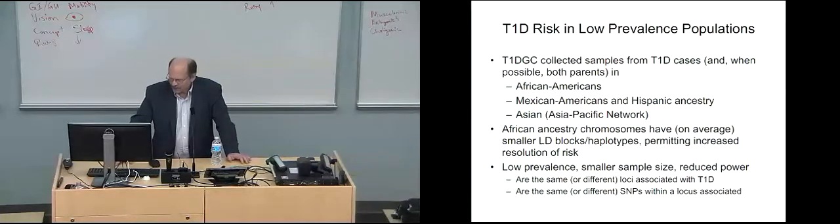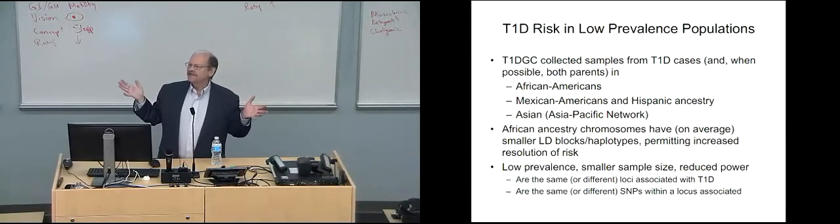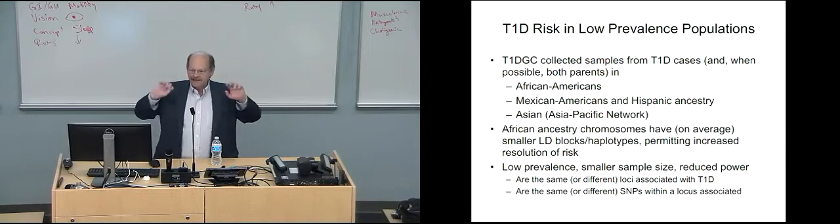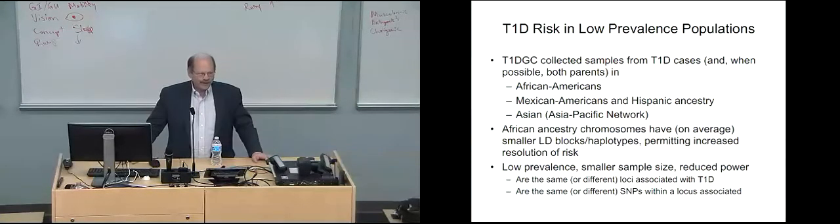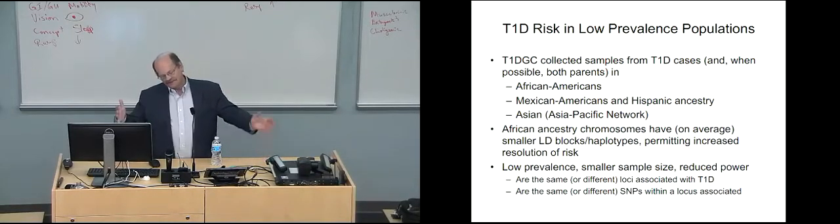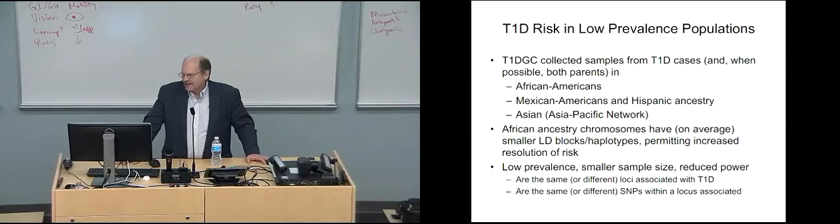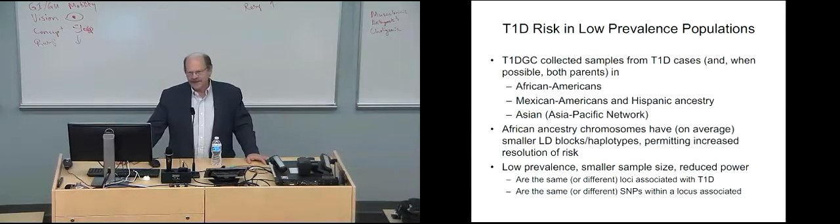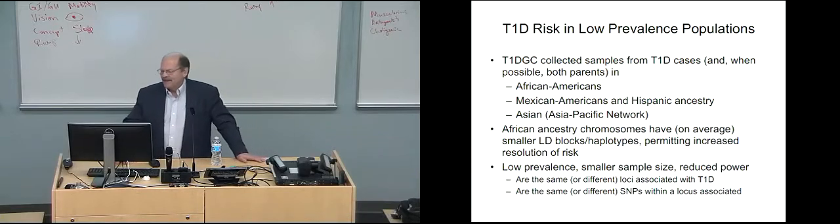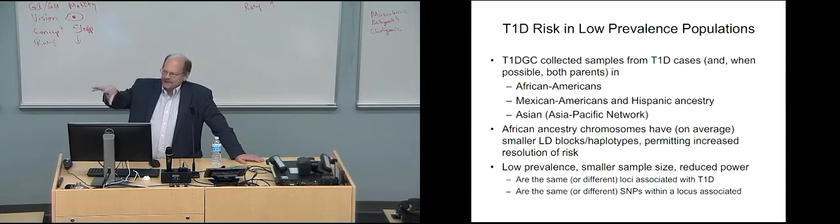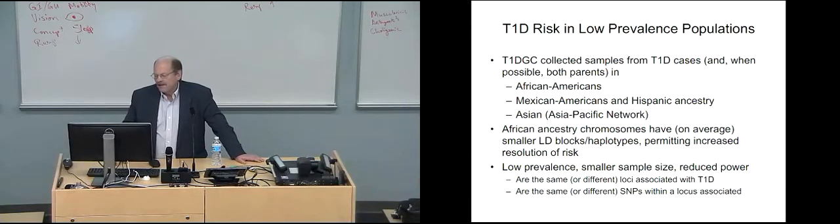So, what about this type 1 risk in low-prevalence populations? One thing about the type 1 diabetes genetic consortium is we split the world into four networks. Each network had a PI, and each PI contacted collection groups and hospitals. There was the North America network. It's easy. We have people in North America. Denver is in North America. Easy to collect cases and controls and families. We had an Asia-Pacific network. It was centered in Melbourne, Australia. So, if you want to have a nice meeting in the wintertime, you go to Melbourne, Australia. They started in Australia, New Zealand, but also covered Singapore, Malaysia, and other areas, Thailand, and so forth. We tried to get in Japan, but that didn't work out.